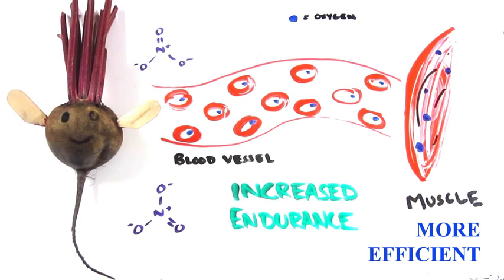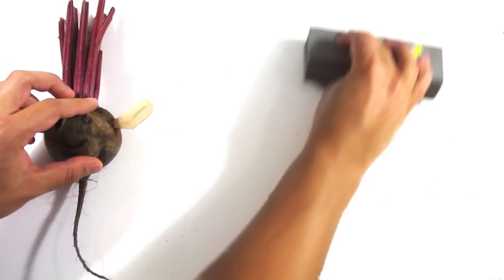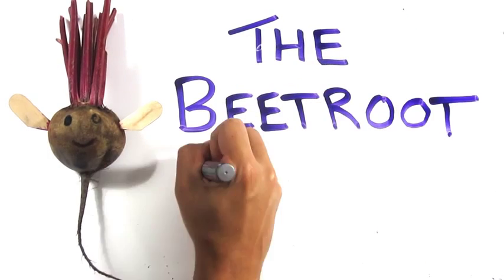This combination leads to the increased endurance, and with many athletes beginning to take advantage of beetroot, the 2012 Olympics have been dubbed by some as the beetroot Olympics.